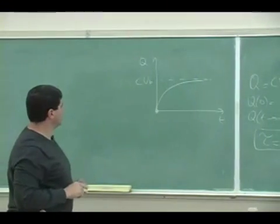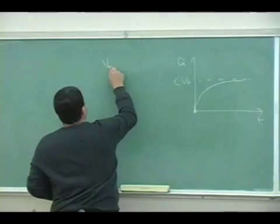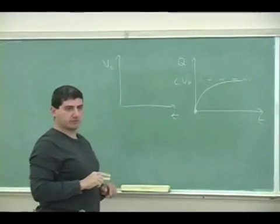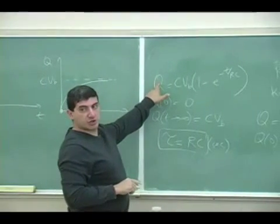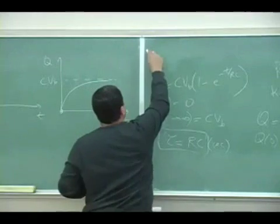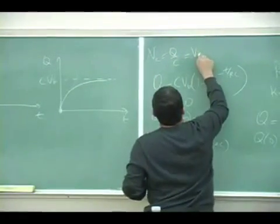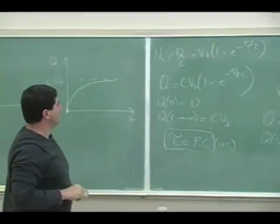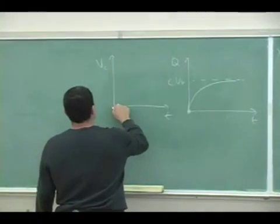CVB. Okay, we could also plot the voltage of the capacitor versus function of time. If we divide the charge by the C, you'll get VB times (1 minus E to the minus T over tau). Then the voltage of the capacitor is going to increase.